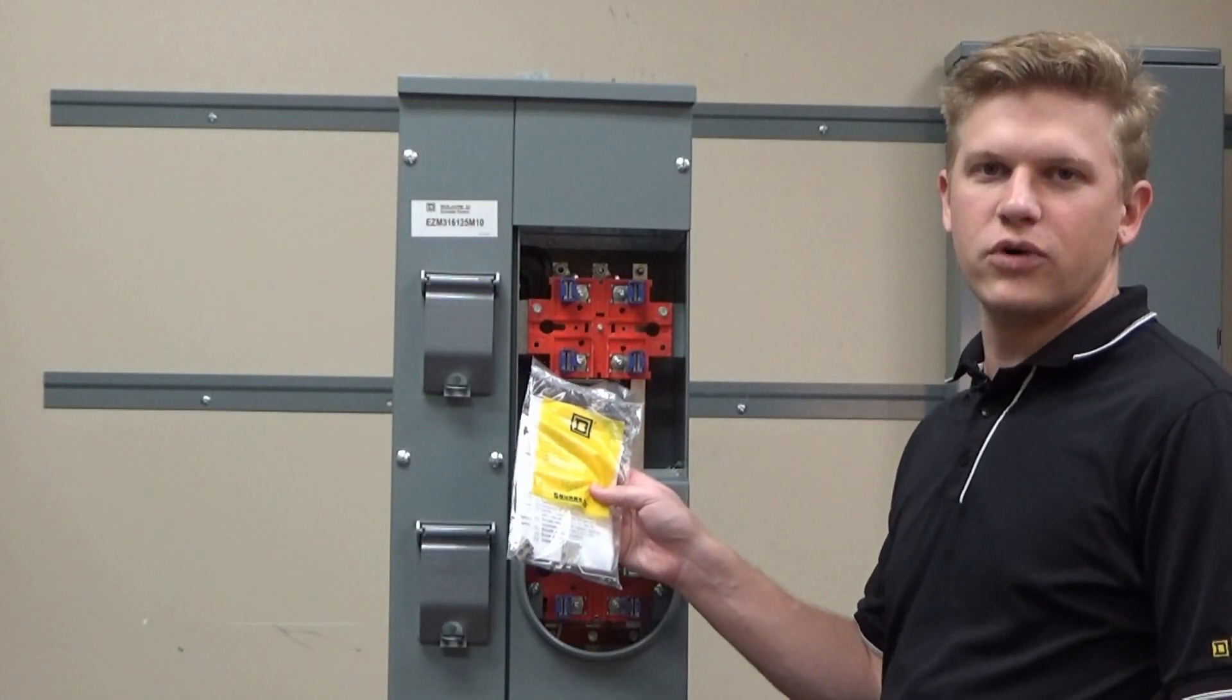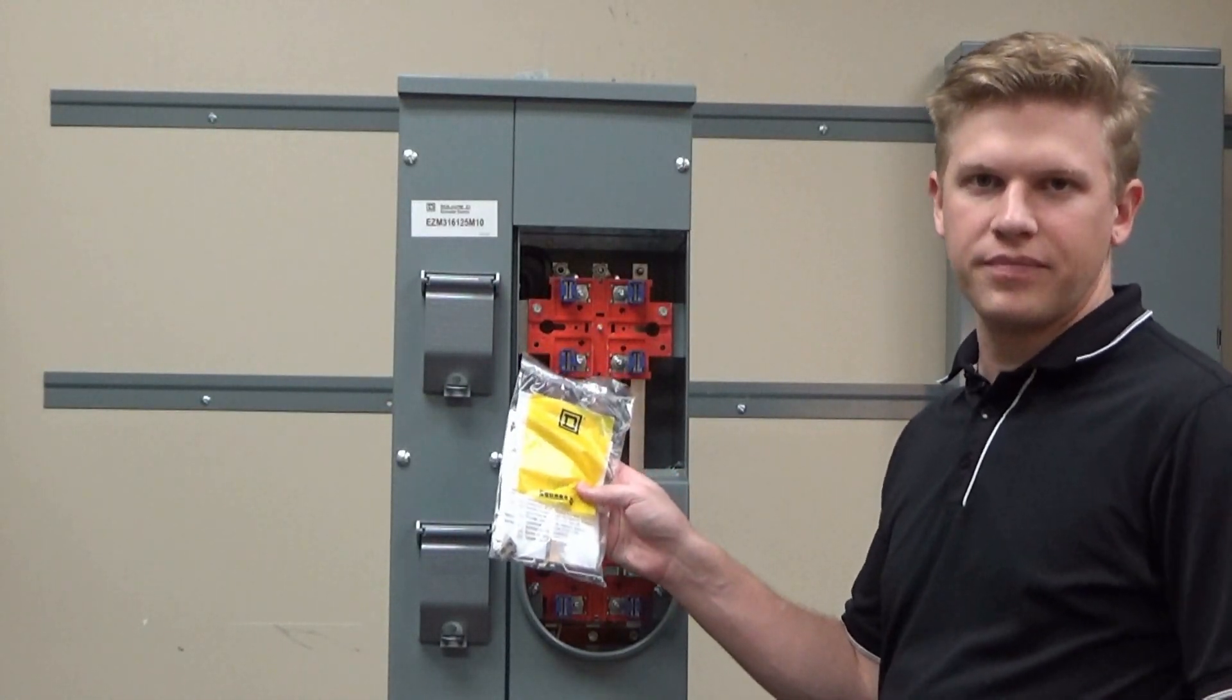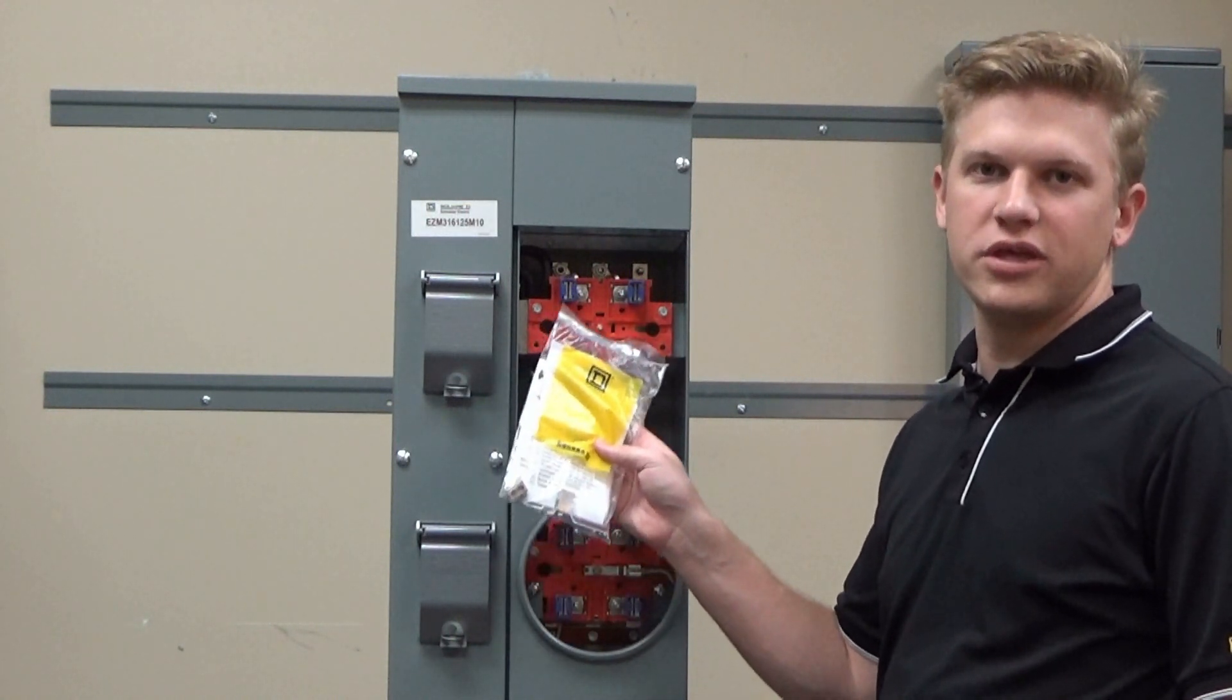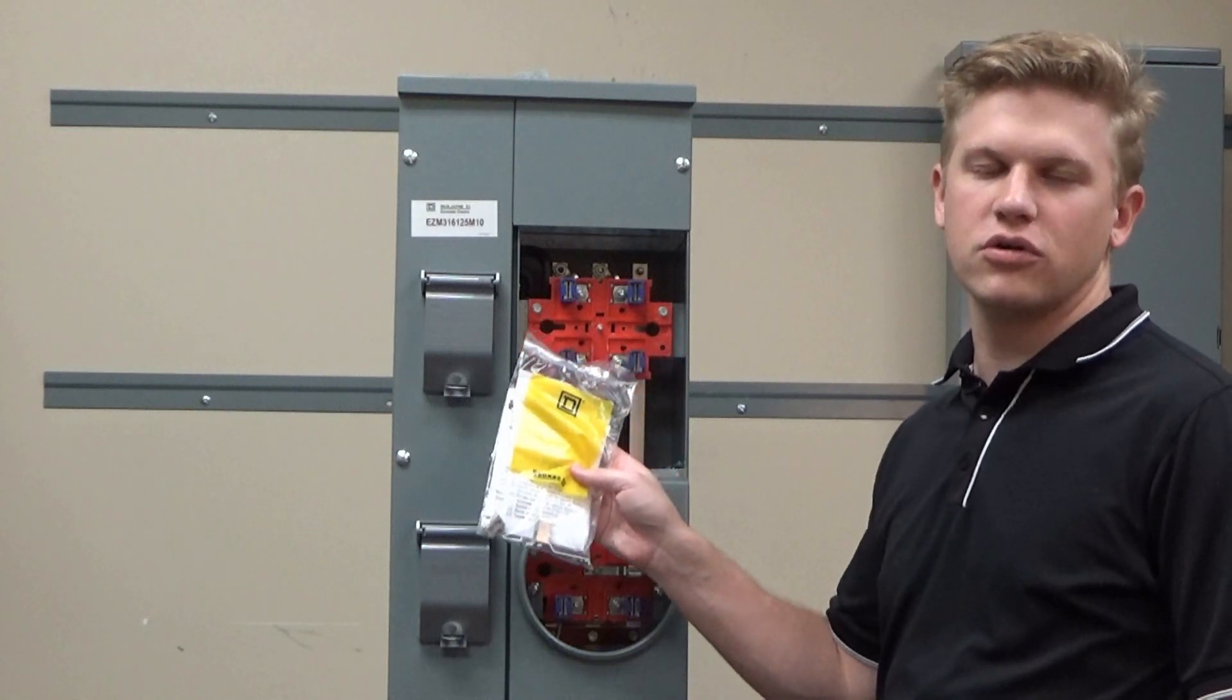With the fifth jaw kit you will get the fifth jaw assembly, the mounting nut for the assembly, as well as the copper wire that will be used to attach it to the neutral of the branch device.